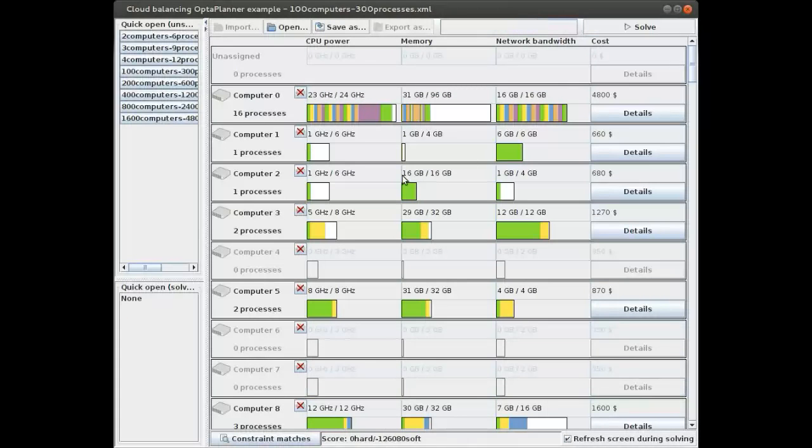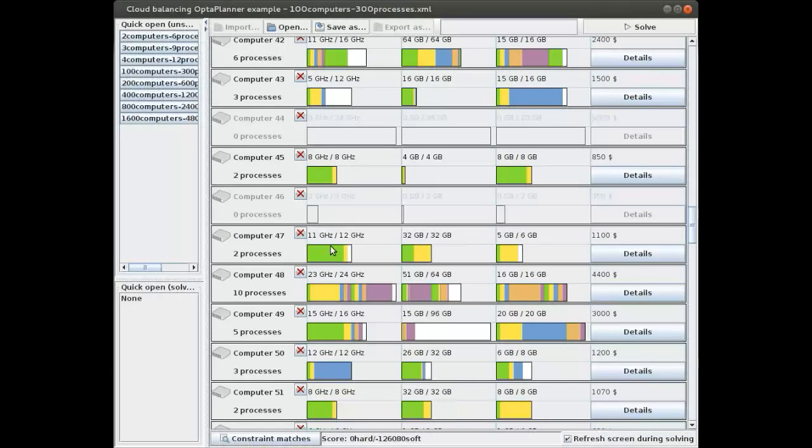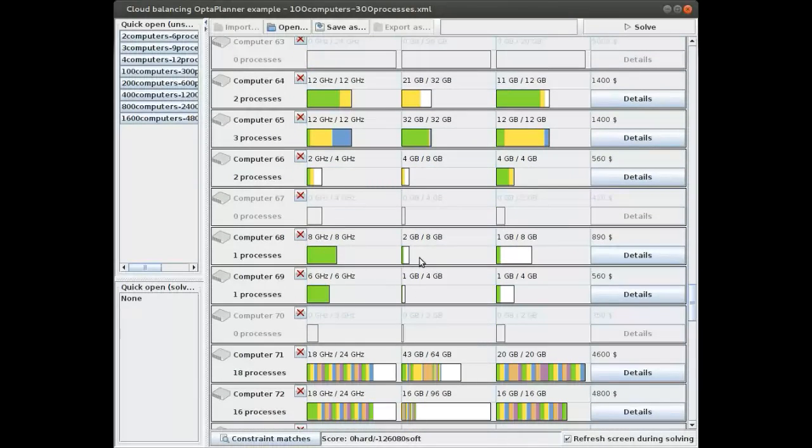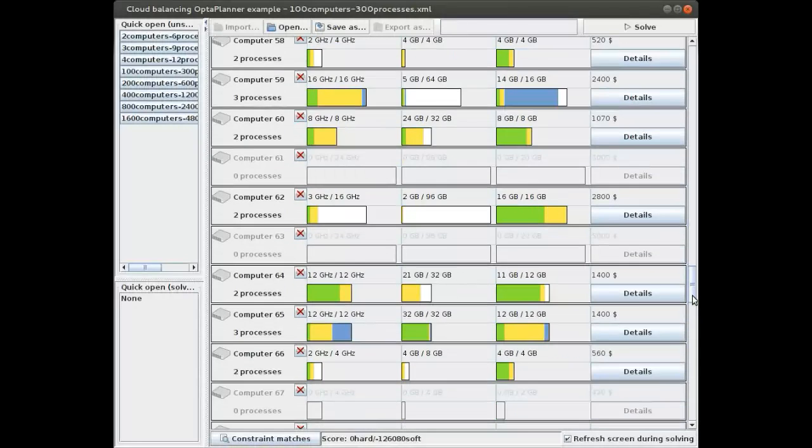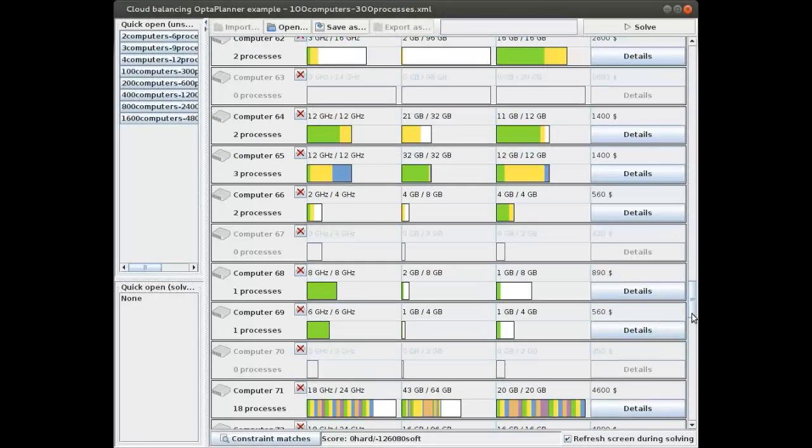He started. I'm just going to stop it a little bit. Here's his first assignment. As you can see none of the hard constraints are actually broken. You can see zero hard constraints broken here on the bottom. If we scroll down you can clearly see there's always enough CPU, RAM, and network bandwidth to accommodate all of the processes. Sometimes there's only one process on a computer. Sometimes there's 18 or 16 processes on the same computer. Especially the computers which have more hardware and a higher price will be able to hold more processes.